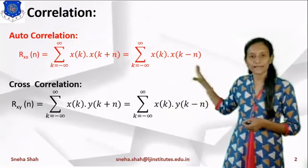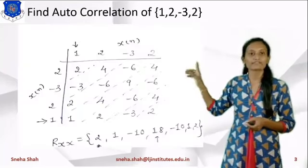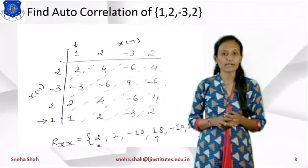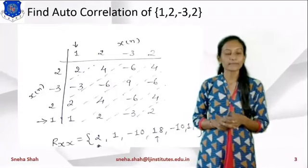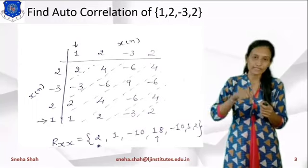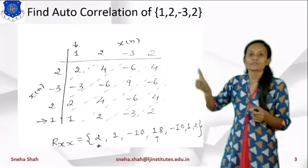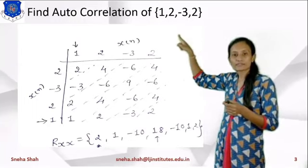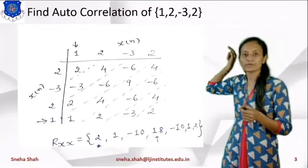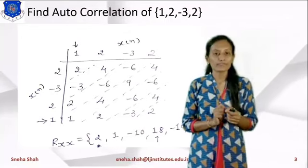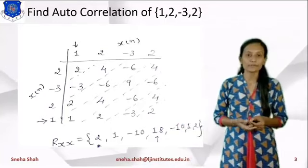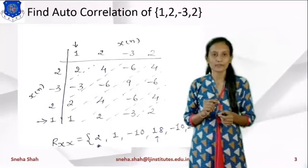Now this correlation will be explained by some examples. The first example is: find the auto-correlation of {1, 2, -3, 2}. It means only one signal is given to you and you have to compare this signal with itself. This term will be considered as x(n), and the value of x(n) is {1, 2, -3, 2}. Now if we want to find out the correlation of this term, we can use the tabulation method for convolution.